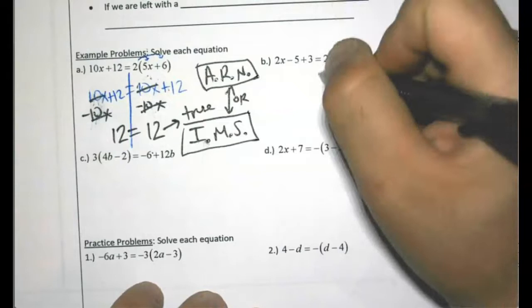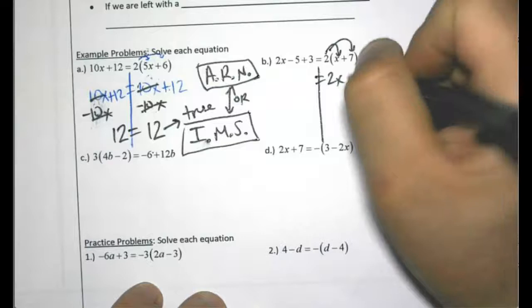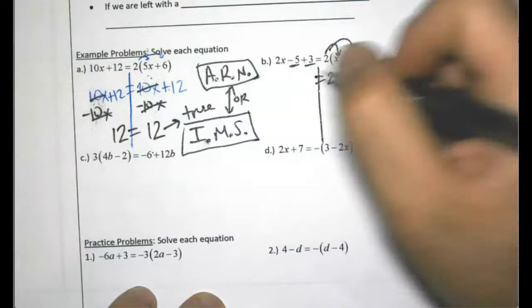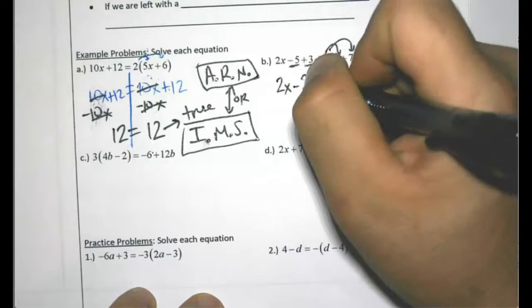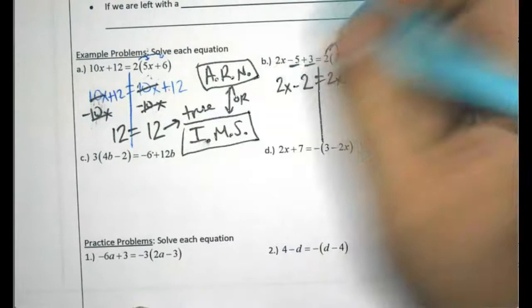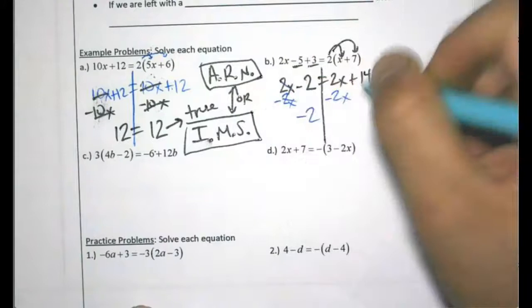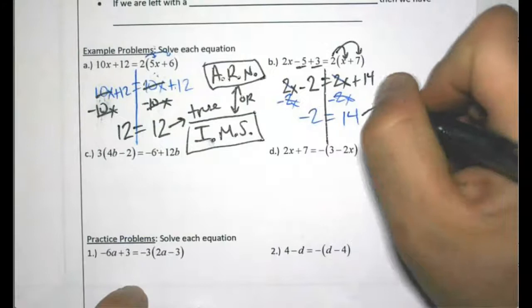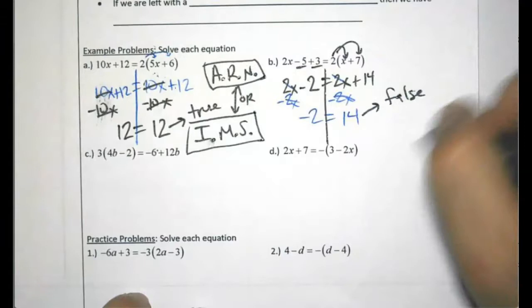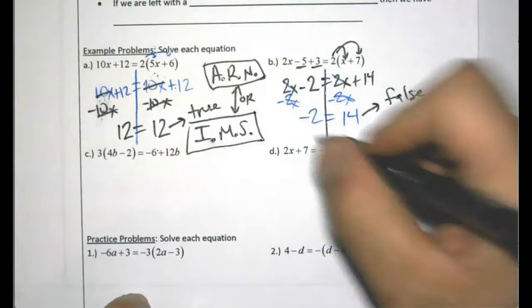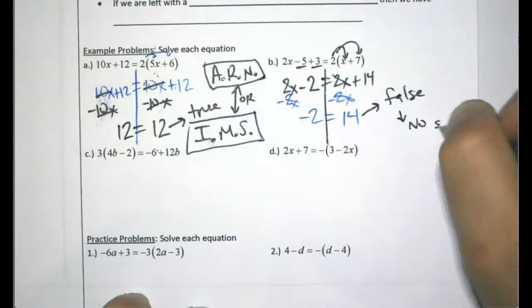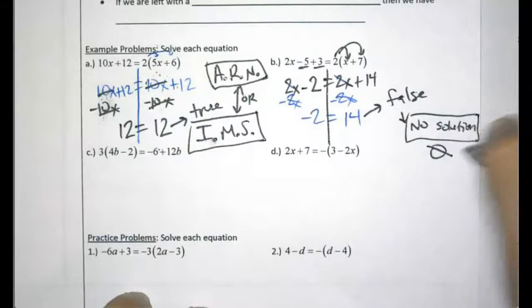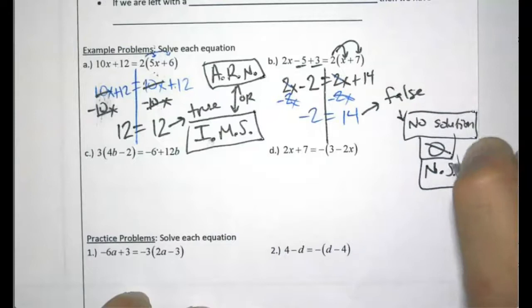Moving on — I draw my line and distribute: 2 times x is 2x, 2 times 7 is 14. On the other side I have like terms: negative 5 plus 3 is negative 2, so 2x minus 2. I subtract 2x to move the variables to the same side — the 2x zeros out — and I'm left with negative 2 equals 14. Negative 2 does not equal 14, so that's a false statement. The answer is no solution, which can also be written as NS or the empty set symbol.